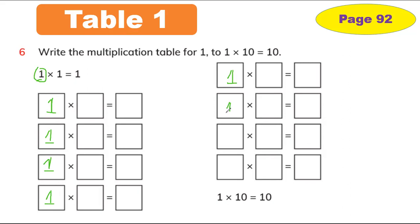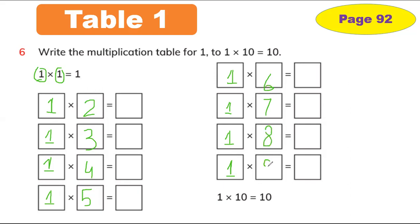Keep remembering: when you multiply any number with 1, the answer will be the same. I write 1 in the first box because we are making Table 1. Now it's time to use 1 to 10. So 1 is here, then 2, 3, 4, 5, 6, 7, 8, 9, and 10 is already here. We don't need to write the first and last — let's find out the answers. It's going to be so easy!